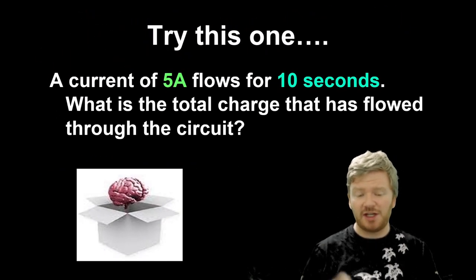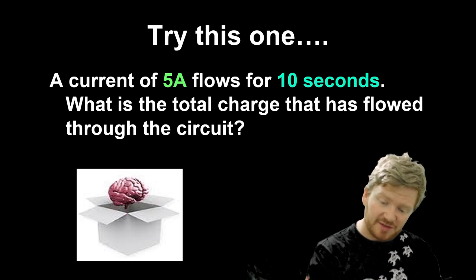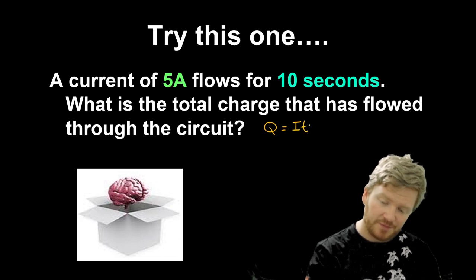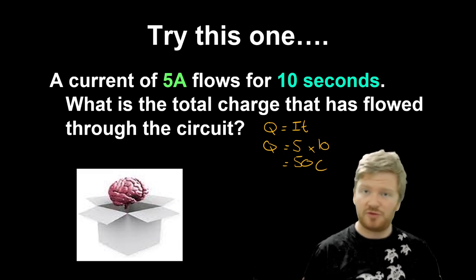So here's one for you to try. A current of 5A flows for 10 seconds. What is the total charge around the circuit? Should be pretty easy for A-level physicists. We say Q is equal to IT. And then I can say, OK, so I want to find Q. So that would be my 5A times my 10 seconds. So it is 50 coulombs of charge.